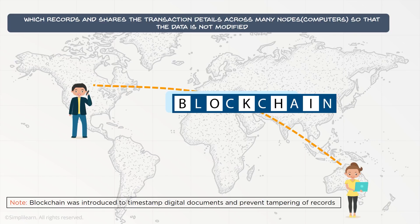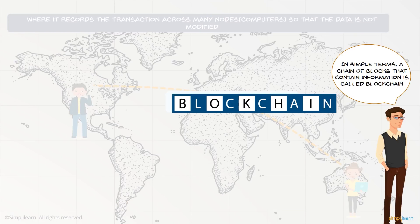Blockchain was originally introduced to timestamp digital documents and prevent tampering of records. In simple terms, a chain of blocks that contain information is called blockchain.